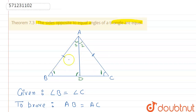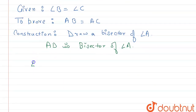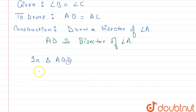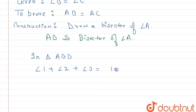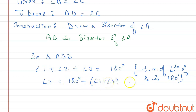We know that the sum of angles of a triangle is always 180 degrees. In triangle ABD, angle 1 plus angle 2 plus angle 3 equals 180 degrees. So we get angle 3 equals 180 degrees minus angle 1 plus angle 2. Let this be equation one.